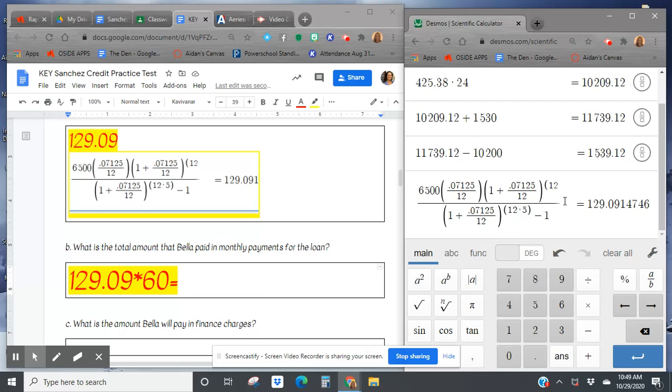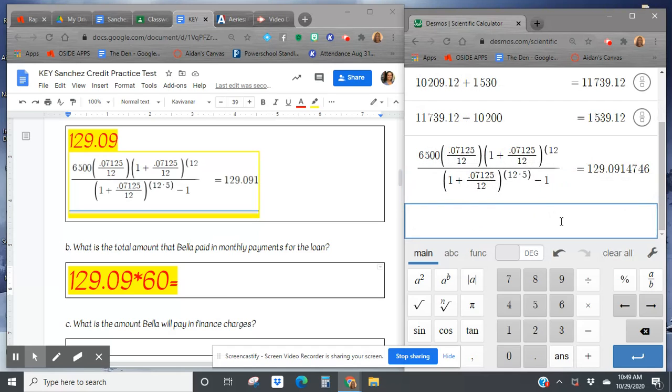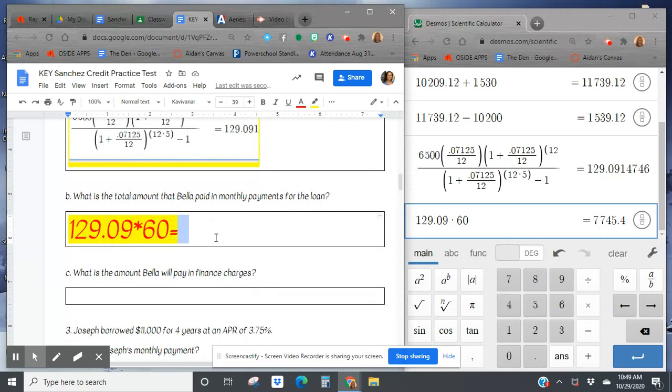Alright, so here comes this one right here. Alright, so $129.09 times 60. She paid $7,745.40.